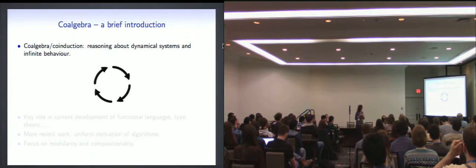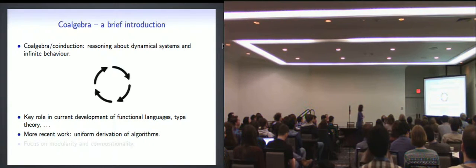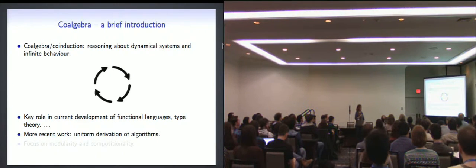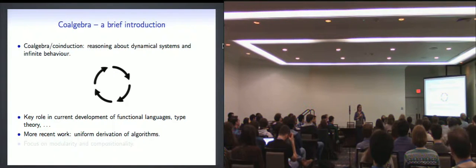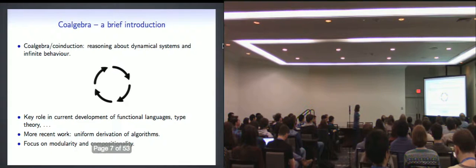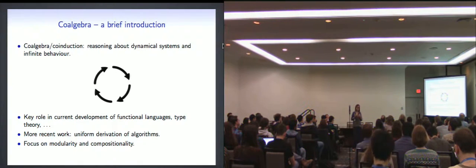Co-algebra kind of appeared as a sub-field of category theory, but in the last few years it made its way to functional languages, to type theory. So it has started to pop up in PL conferences. And a lot of recent work has been devoted to uniform derivation of algorithms, and I'll tell you a little bit about that in this talk. And a lot of the focus on co-algebra is compositionality, which is a key thing. If you're analyzing a problem, let it be equivalence of automata or something else, if you want your algorithm to scale, you want things to be compositional. So a lot of the focus on co-algebra and co-induction is about compositional methods.